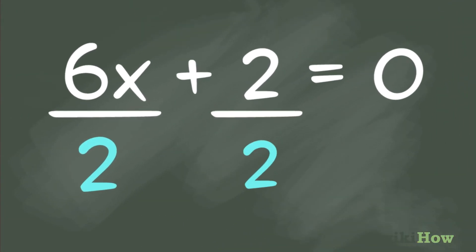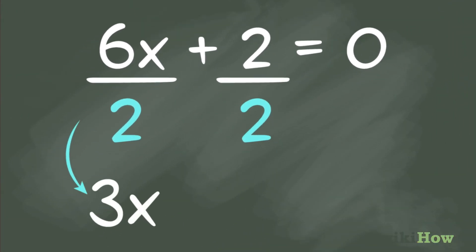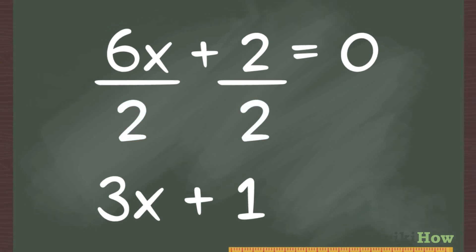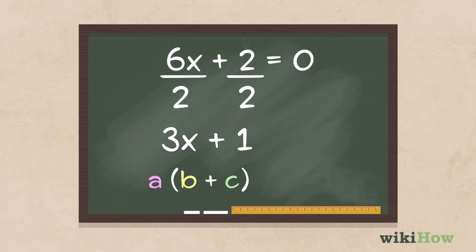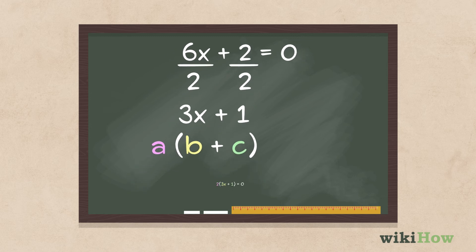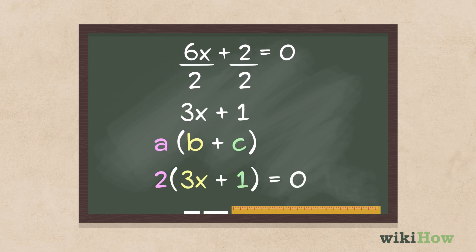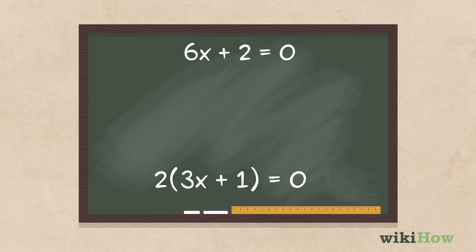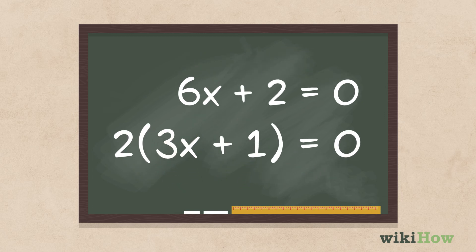Divide each term by the largest common factor, then rewrite the expression in the form a(b plus c), where a is the largest common factor. After factoring, our example equation will become 2(3x plus 1) equals 0.